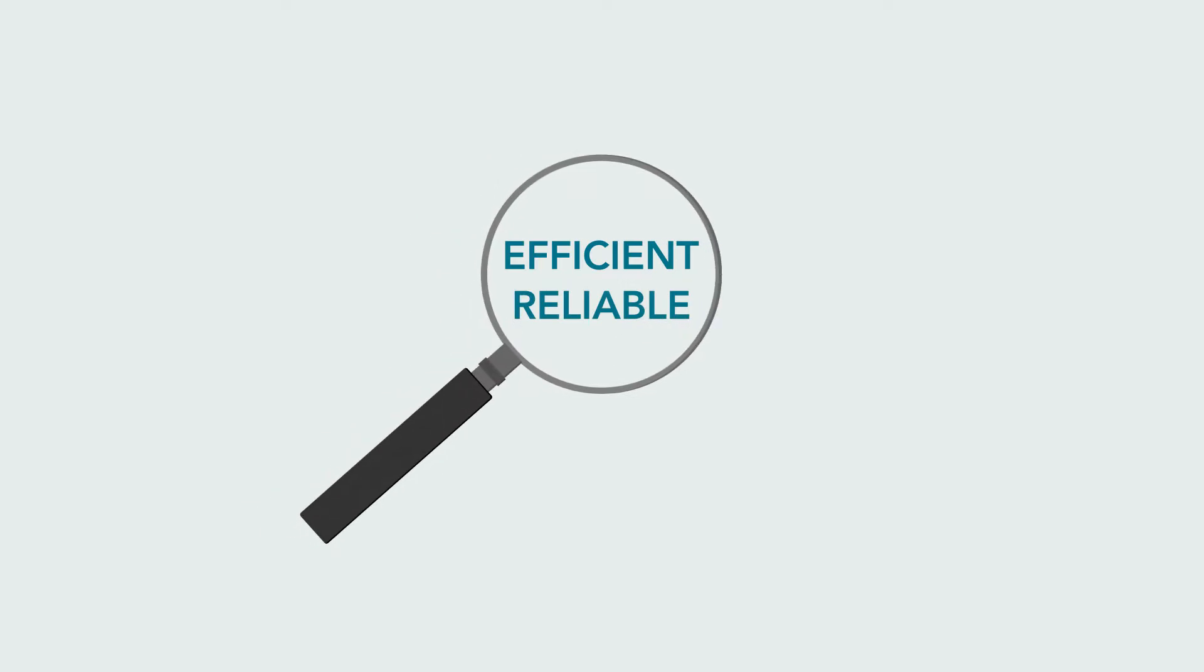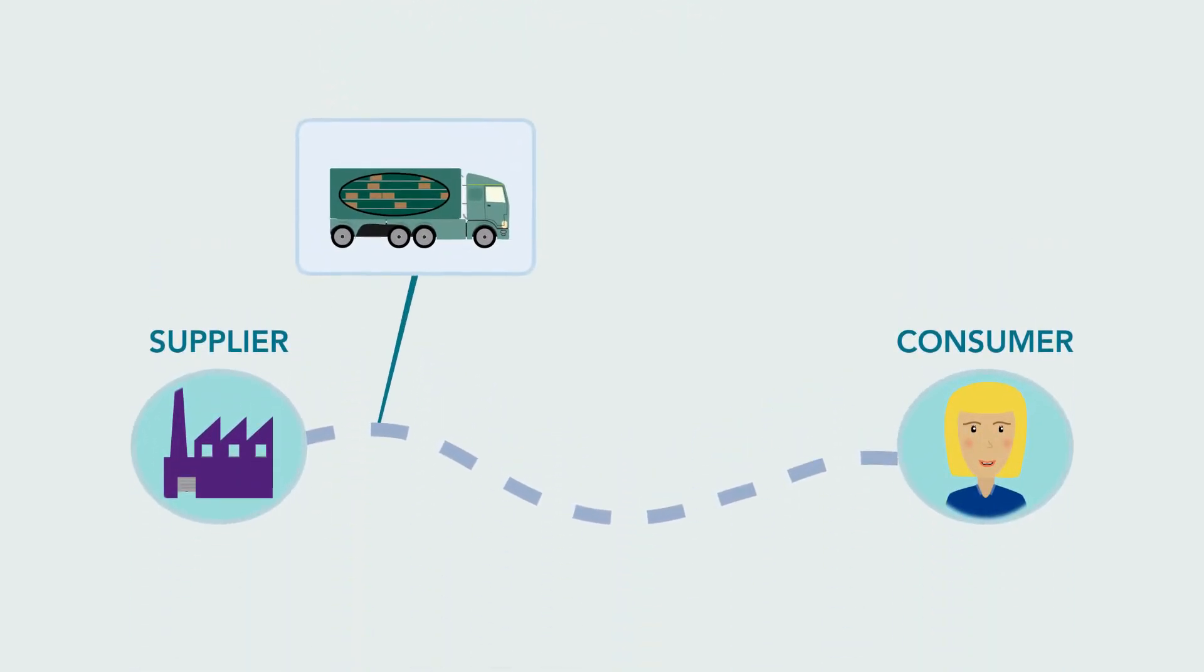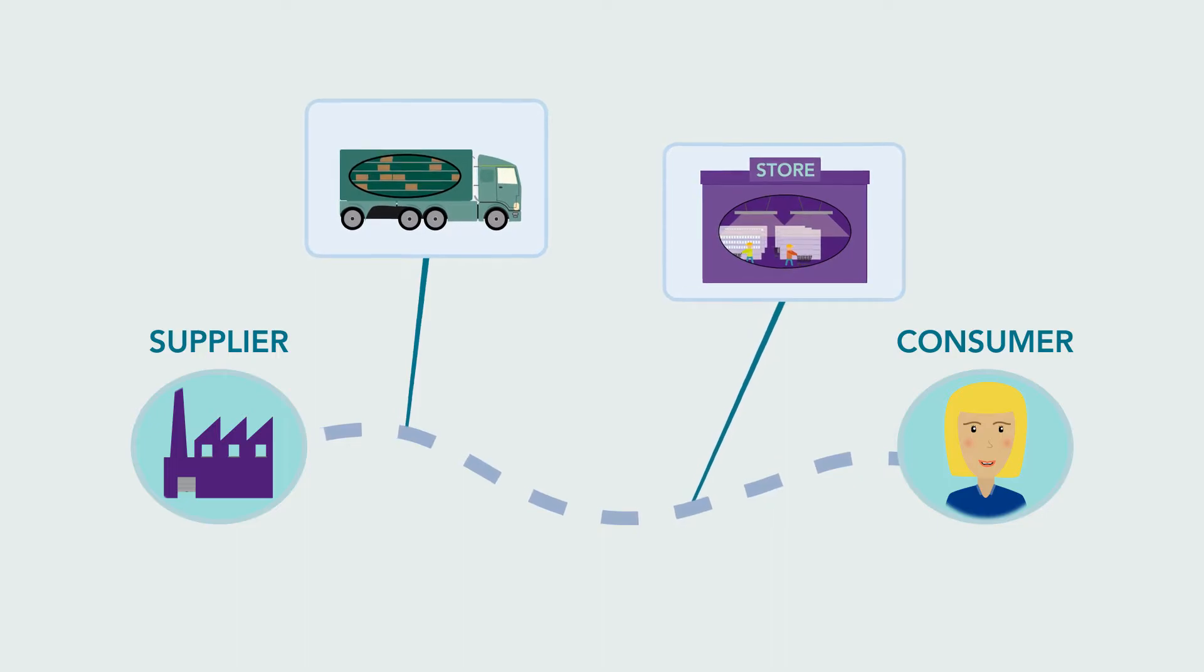RAIN RFID provides efficient and reliable identification, which helps in tracking and locating components from the supplier all the way to the consumer.